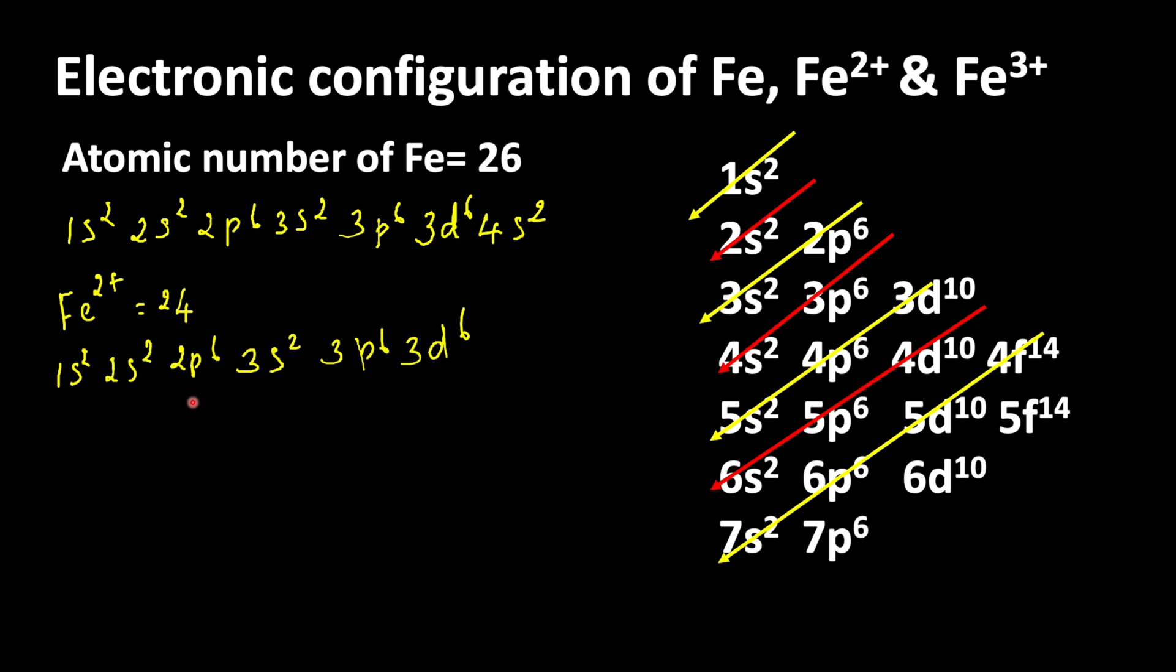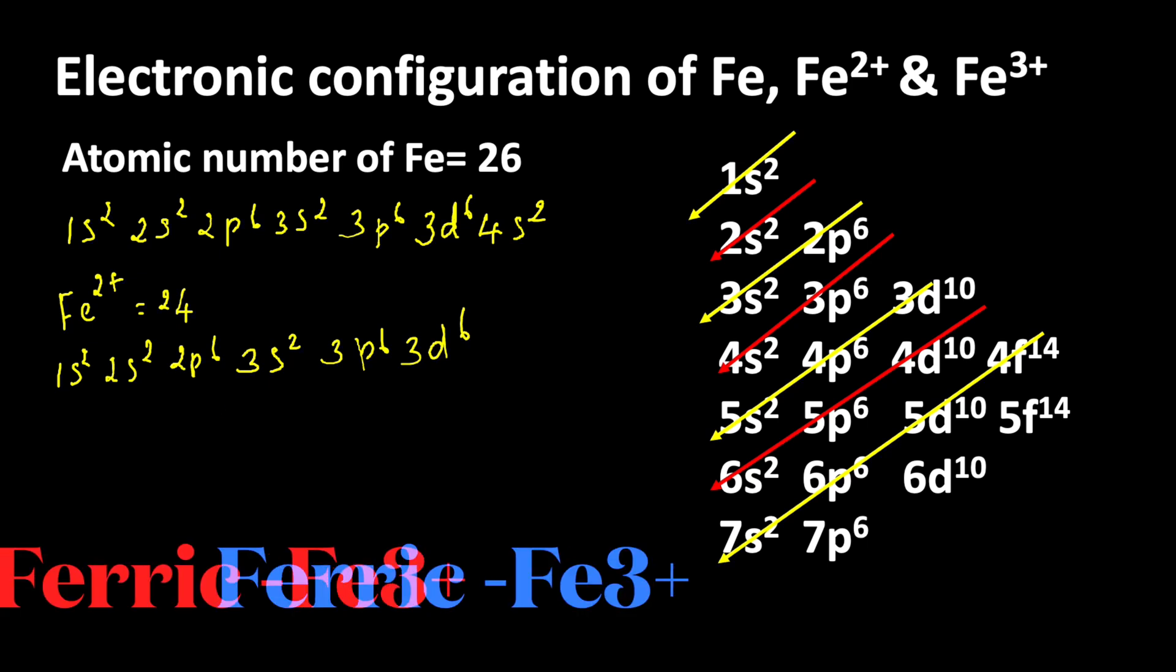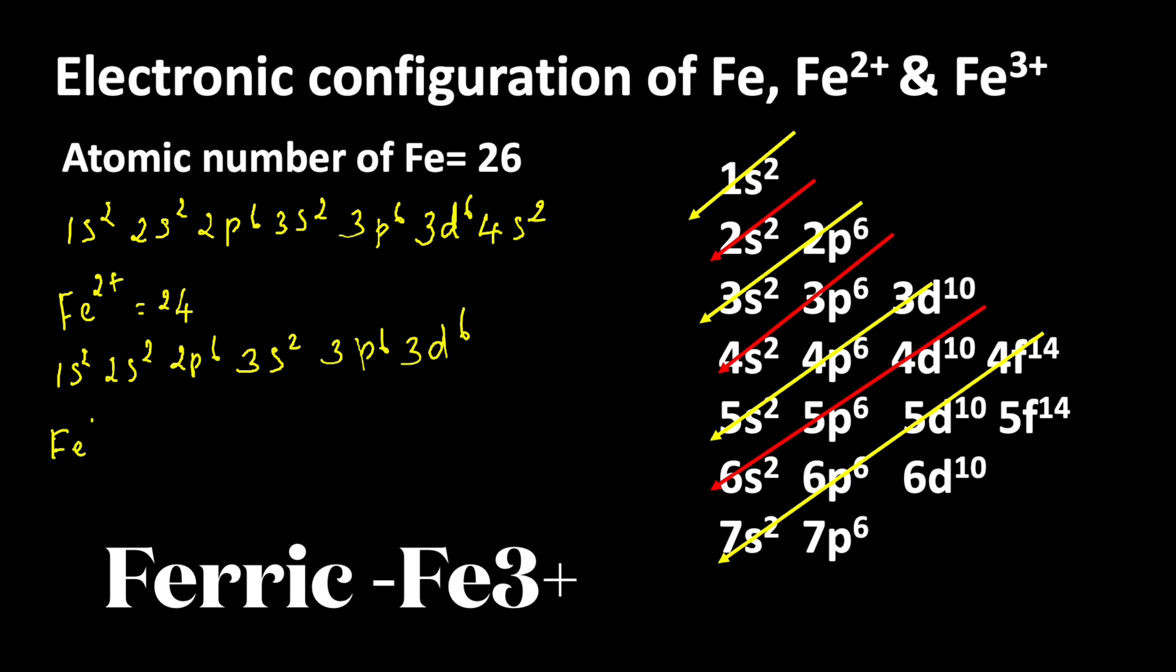Now we can write the electronic configuration of Fe3+ ion. Fe3+ ion is formed when iron loses 3 electrons. So atomic number of iron 26 minus 3, we will get 23 electrons.